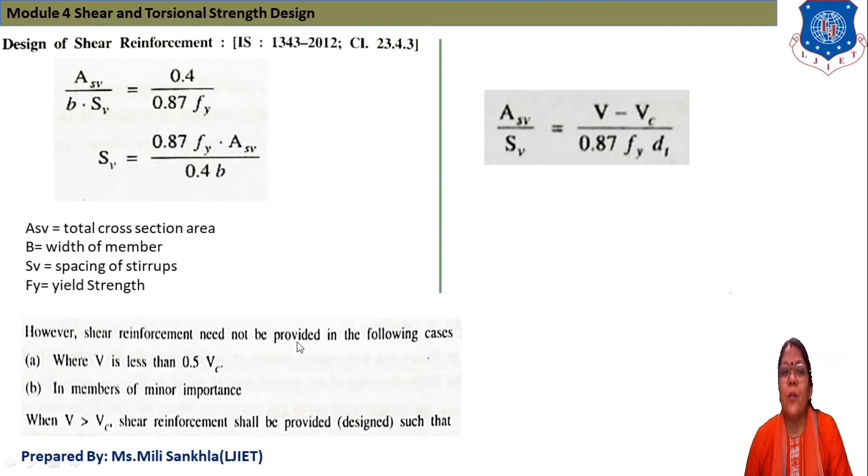Shear reinforcement need not to be provided in following cases. When V is less than 0.5 VC. If member of minor importance and V greater than VC, shear reinforcement shall be provided. Relation is given whenever V shear force is greater than shear capacity of concrete, shear reinforcement shall be provided. And relation is ASV divided by SV is equal to V minus VC divided by 0.87 FY DT. This one is the condition when we provide shear reinforcement.